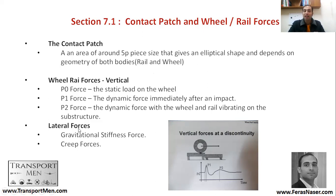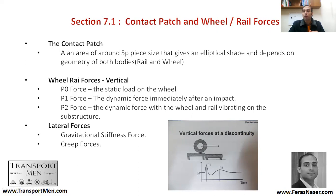It has vertical forces and lateral forces. To understand these vertical forces, you need to look at B0, B1, and B2 forces. B0 is the static load on the wheel due to the train weight. B1 is the dynamic force immediately after impact, generated by the movement of the wheel. B2 is also a dynamic force, but it results from the wheel and rail vibrating on the substructure. All of those are vertical forces.